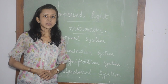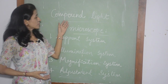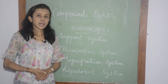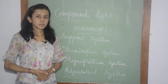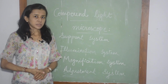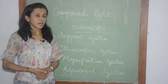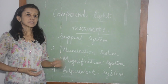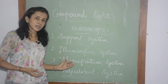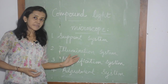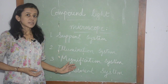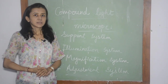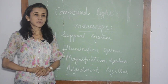Hello everyone, today we will discuss the compound light microscope. The parts of the compound light microscope are divided into four systems: the support system, the illumination system, the magnification system, and the adjustment system. Let us discuss them one by one.